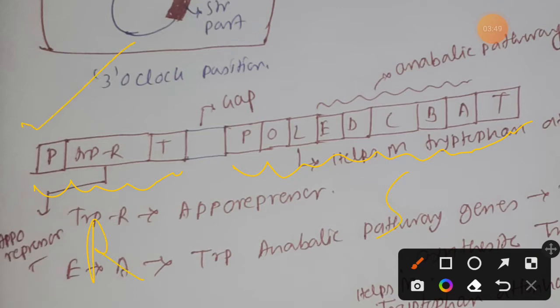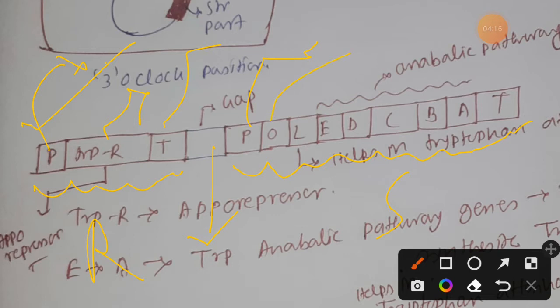In the regulatory part there will be a promoter — and remember this promoter will be a weak promoter, so it will facilitate tryptophan arts production in a very low amount. There will also be a terminator, and there is a gap present. After that gap there will be a promoter for the structural gene, and also there will be an operator, and then various genes.